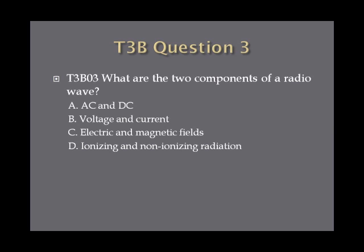Question 3. What are the two components of a radio wave? A, AC and DC. B, voltage and current. C, electric and magnetic fields. D, ionizing and non-ionizing radiation.